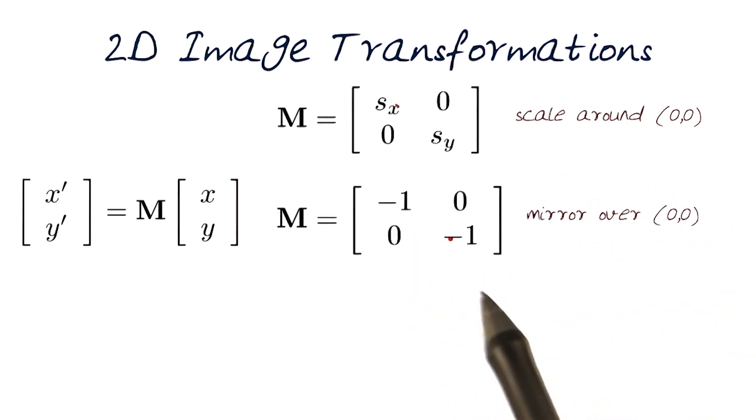If I put minus 1 on both of them, that would be a mirror over the origin. So we'll flip both the x-axis and the y-axis to generate a mirror flipped image.